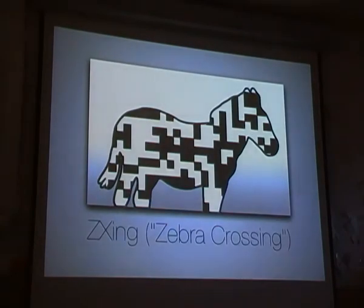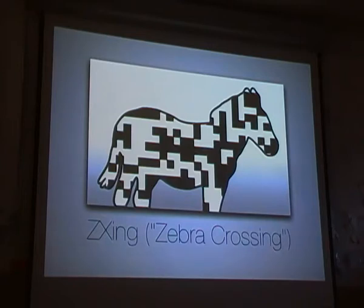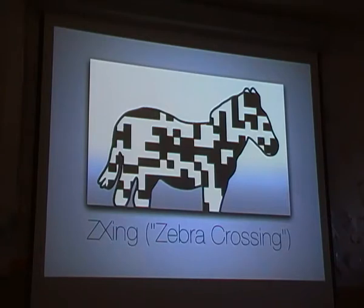For the QR reading we used ZebraCrossing, the ZXing library, which is a really nice library. It's available for C++, Java, Android, and iOS. Really, if you want to do anything with QR codes or decoding, this is it. It's open source, developed by a Google developer who did it in his 20% Google time. It can also run on a Raspberry Pi or you can port it to whatever device you want. It's really easy.